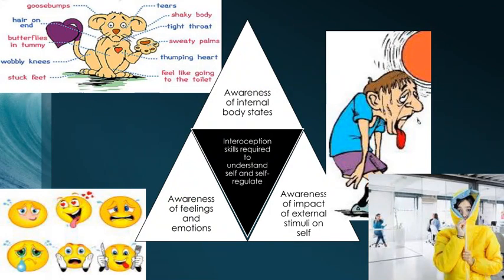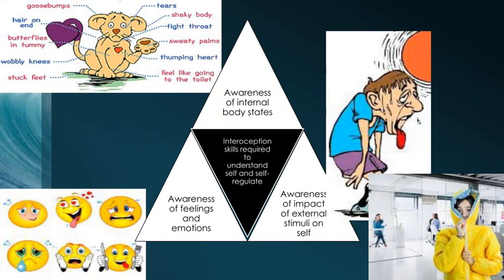The third aspect of interoceptive awareness we need for self-management and self-regulation is awareness of the impact of external stimuli on ourselves. For example, we've all seen children and adults dressed in sweaters when it's hot — if asked aren't you hot, they say no. They don't actually feel hot; their body is hot but their interoceptive awareness around temperature is not accurate.